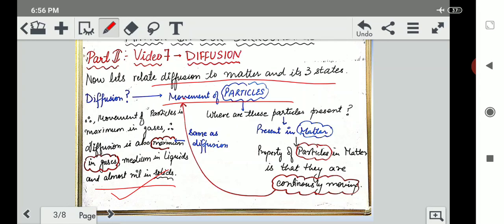Now where are these particles present? Diffusion is occurring because of particles' movement. And these particles are present where? We had studied in the very first slide of this chapter that matter is made up of particles. Particles are present in matter. Indirectly diffusion is happening in matter because diffusion is happening in particles and particles are present in matter. So movement is occurring in the matter only.